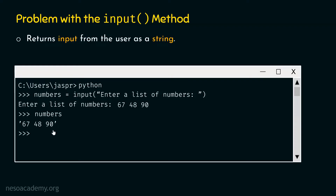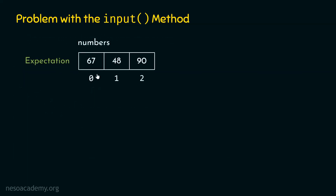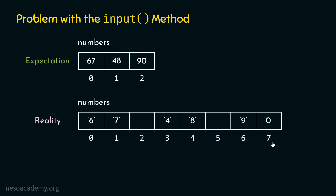To understand this better, let's visualize what we want versus what we are getting. Our expectation was to get a list with three items — 67, 48 and 90 — at indices 0, 1 and 2, with numbers pointing to this list. But what we are actually getting is a list of eight items where each item is a character: '6', '7', a whitespace, '4', '8', and so on.